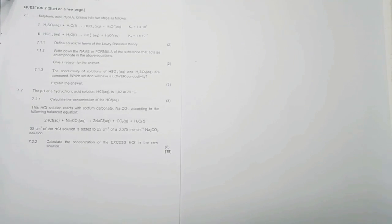So let's have a look quickly at that question seven. So they give us sulfuric acid that ionizes into two steps as follows. They say define an acid in terms of the Lowry-Bronsted theory. Remember, according to the Lowry-Bronsted theory, an acid is simply just a proton donor. If you want to add volume to this, you can say it's a proton donor in the presence of a base. So it is simply just a proton donor.